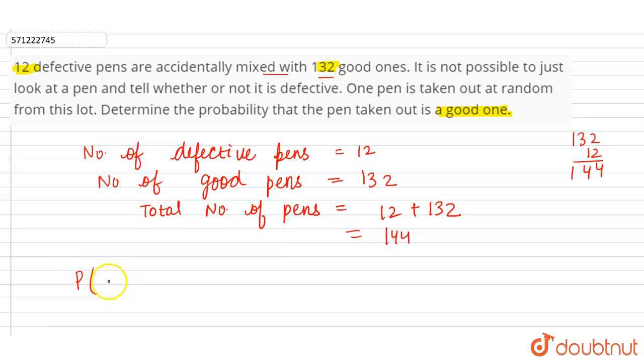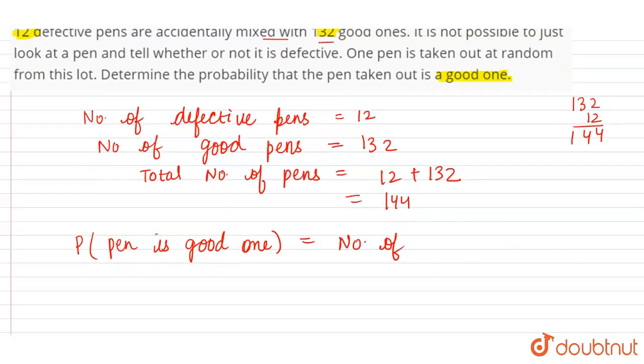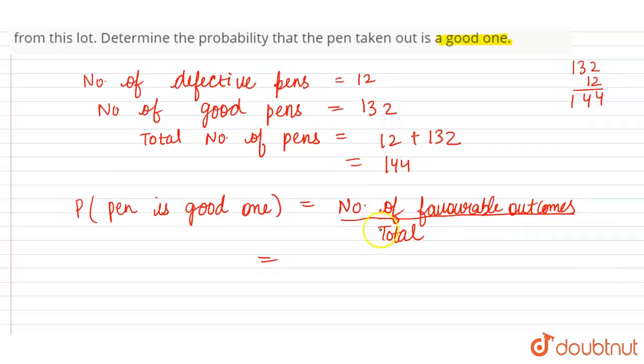Now it is asking to find the probability that the pen is a good one. To find the probability, the formula is number of favorable outcomes divided by total outcomes. Number of favorable outcomes means number of pens that are actually in good condition, so these are 132, and total number of pens are 144. So 132 divided by 144.